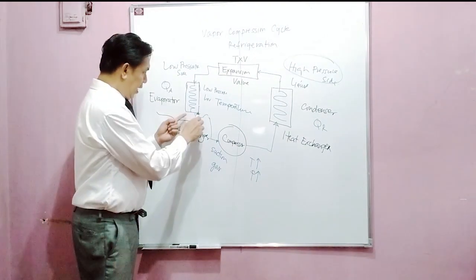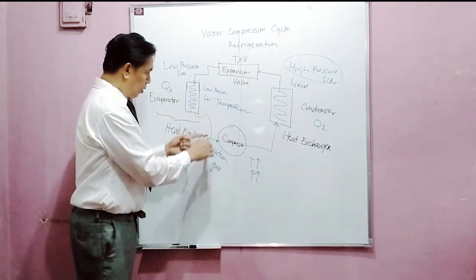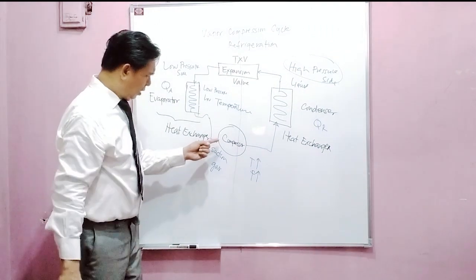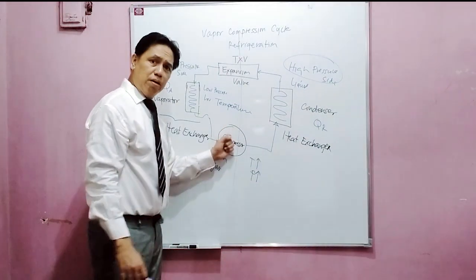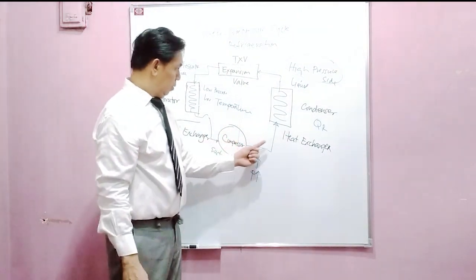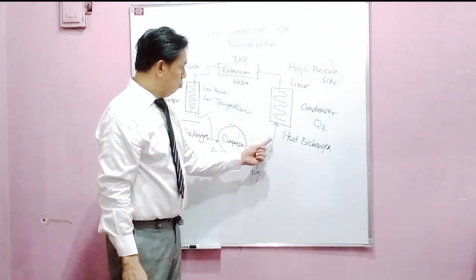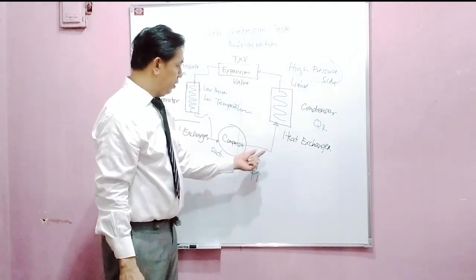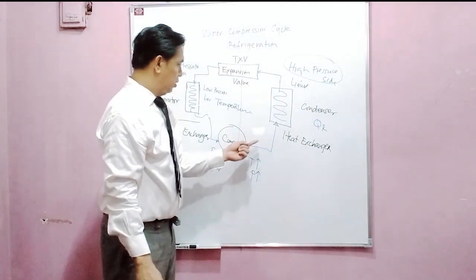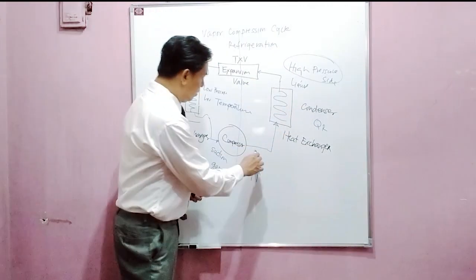Then again the vapor will come back to the compressor, it will be compressed, and then it will go to the heat exchanger which is the condenser. So this is the continuous cycle.